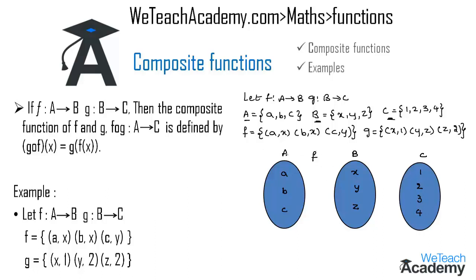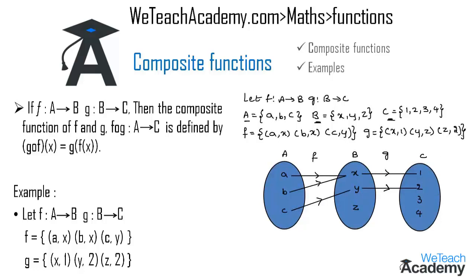Here f is a function from A to B and g is a function from B to C. Let us map f using the ordered pairs: (a, x) maps a to x, (b, x) maps b to x, and (c, y) maps c to y. Now for function g: (x, 1) maps x to 1, (y, 2) maps y to 2, and (z, 2) maps z to 2.